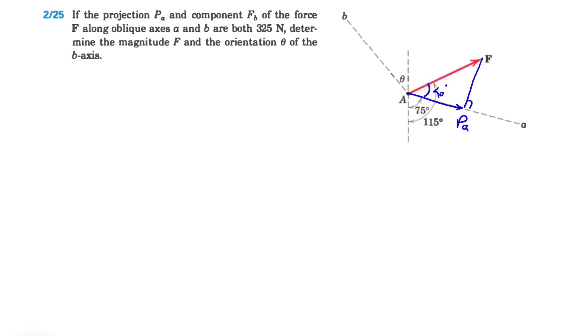We know Pa = F·cos(40°). Since Pa is 325 Newtons, F can be found by dividing 325 by cos(40°). If you do that, we get 424.2 Newtons. That's the first part of the question - the magnitude of F.